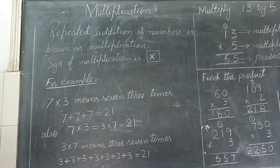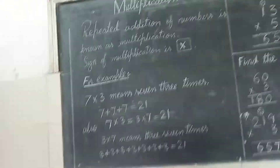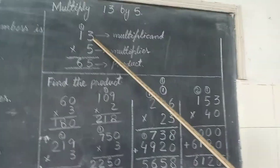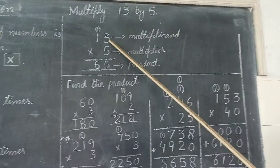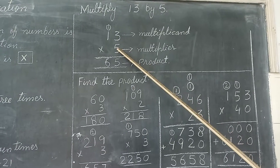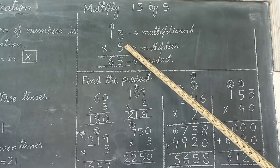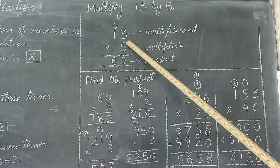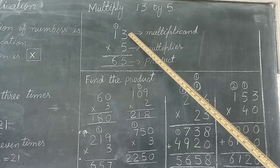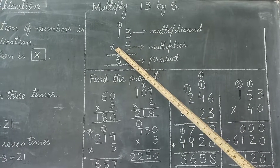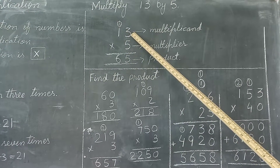Multiplication ki more examples. Multiply 13 by five. Aap isko vertically likhenge — bigger number upar likha jaata hai, aur aap iske below smaller number likhein. Aur aap isko right side se working start karenge. Aapne sign likha — iska matlab hai table parhna. Aap five ka table teen tak parhainge.